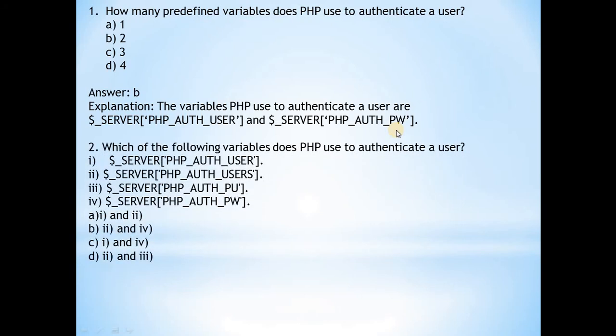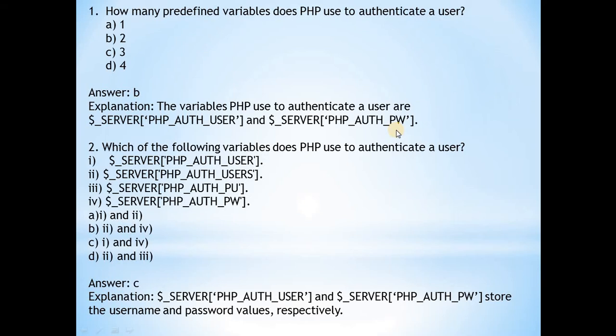Second question: Which of the following variables does PHP use to authenticate a user? Answer is c, option one and four: $_SERVER['PHP_AUTH_USER'] and $_SERVER['PHP_AUTH_PW']. These two store the username and password values respectively.